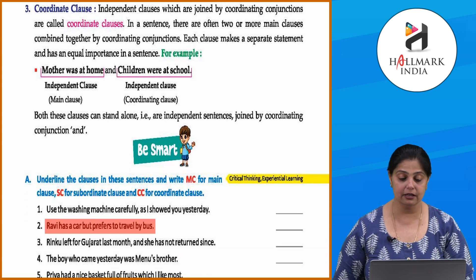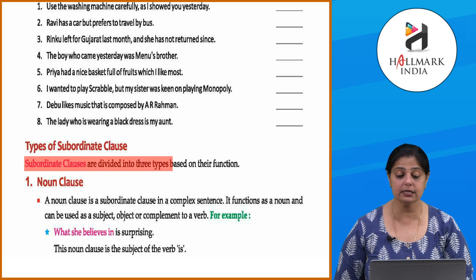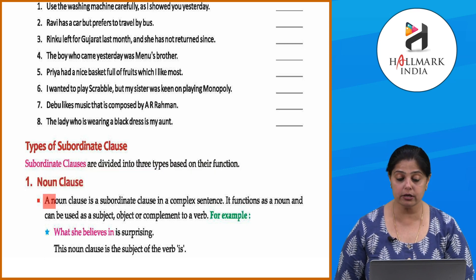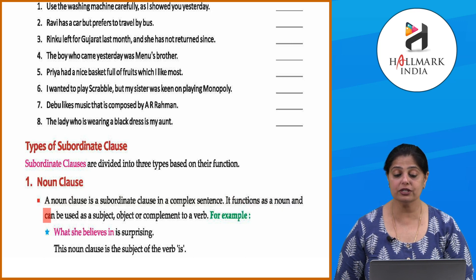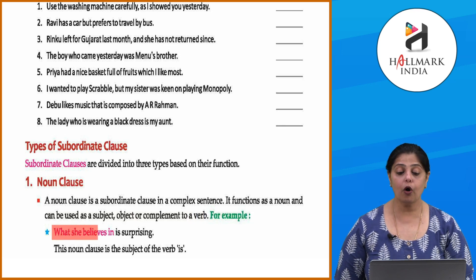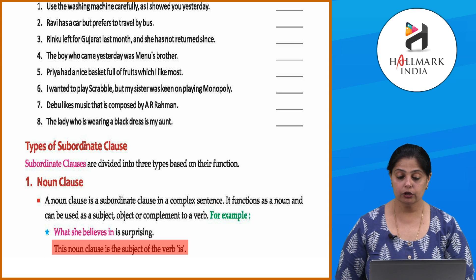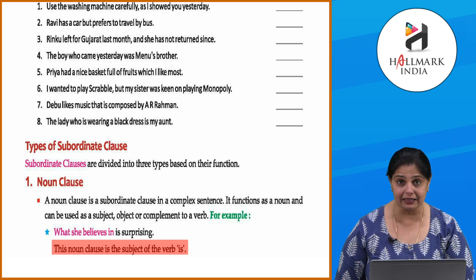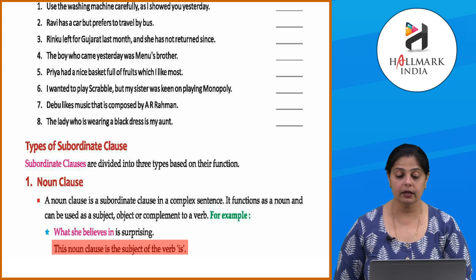Now let's talk about types of subordinate clauses. Subordinate clauses are of three types. First is the noun clause. A noun clause is a subordinate clause in a complex sentence; it functions as a noun and can be used as a subject, object, or complement of a verb. For example: 'What she believes in is surprising' — here the noun clause 'what she believes in' is the subject of the verb 'is.'